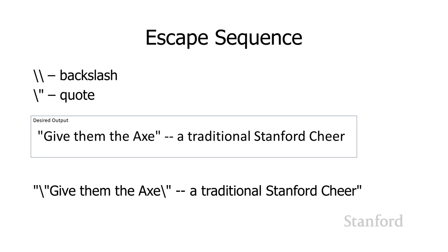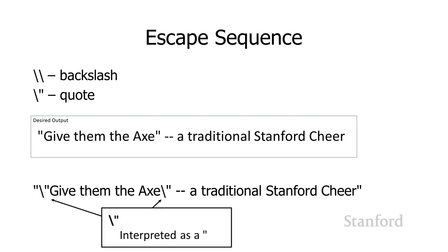The way I get around this is by using the backslash-quote escape. So I write: quote, backslash-quote, give them the ax, backslash-quote, a traditional Stanford cheer. What happens is Python sees that first double quote to open the string, then sees the backslash before the next double quote and says: don't treat that as a matching double quote that would terminate the string — instead, that's a special character meaning I want an actual double quote in the output, not a delimiter for when the string starts and ends.